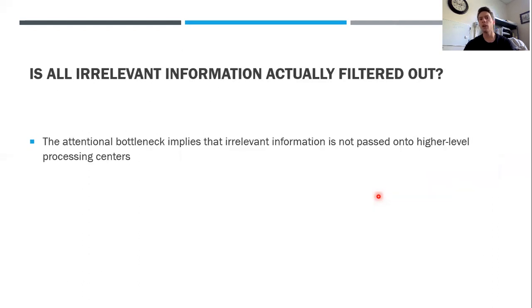This idea is that attention serves as a bottleneck of sorts. The question is: is all irrelevant information actually filtered out? Does attention always filter all irrelevant information out? This attentional bottleneck implies that irrelevant information is not being passed on to higher-level processing centers. But next time we'll pick up here and talk about the cocktail party phenomenon, which suggests that perhaps some irrelevant information does move on beyond sensory memory.